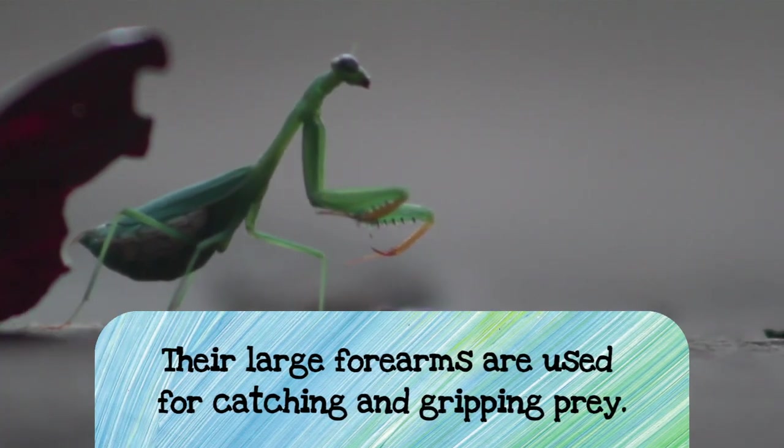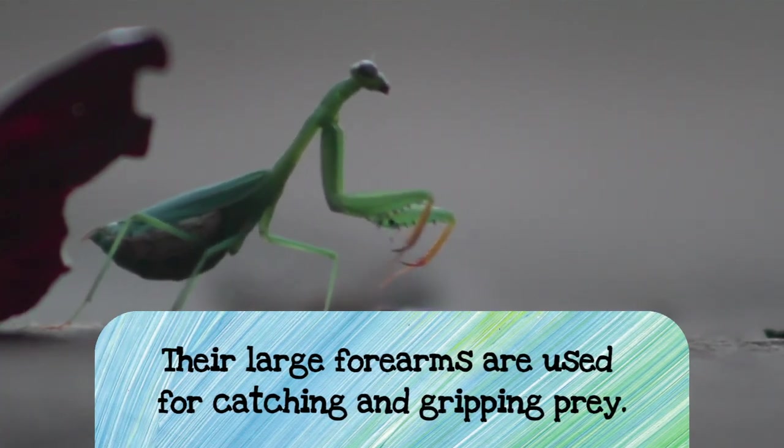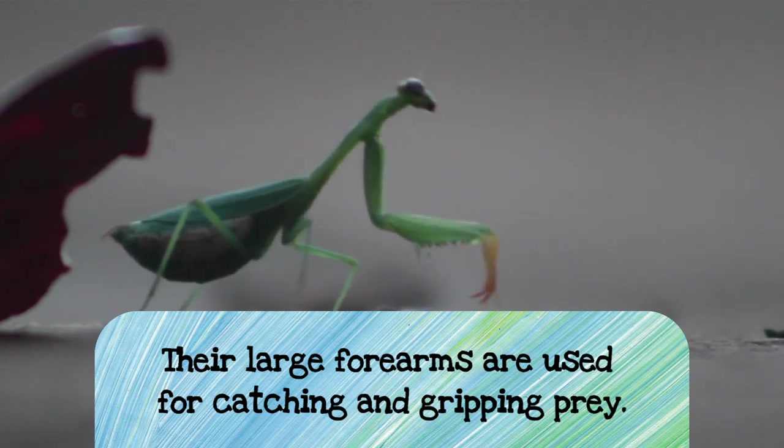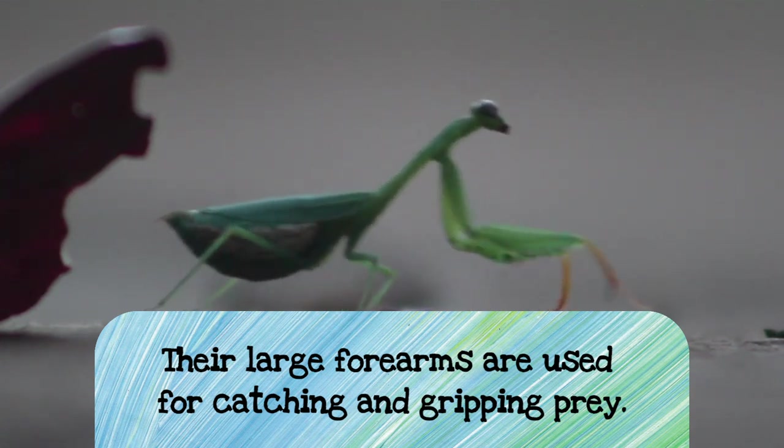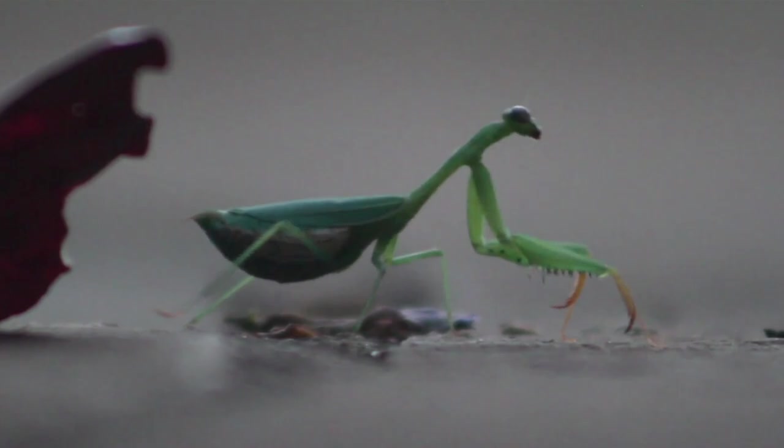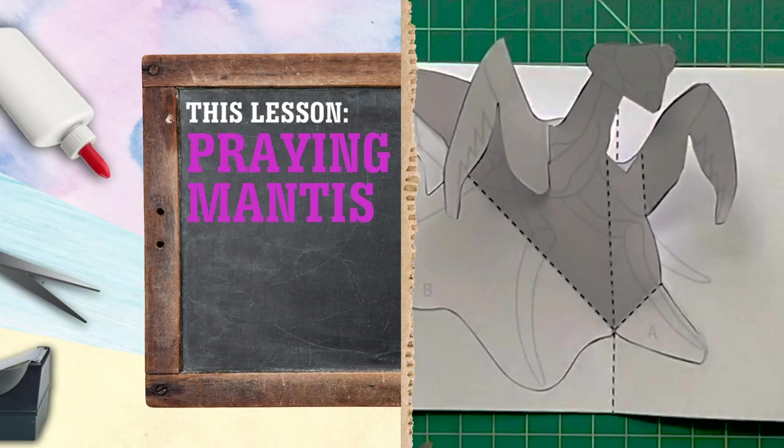They have really large forearms because that's what they catch their prey with. They pray to catch prey. Mantises are really cool, beautiful insects. So let's make it pop, let's make our very own pop-up mantis.